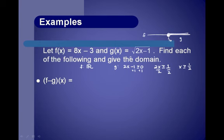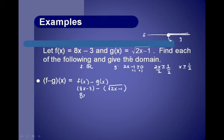f minus g of x means f of x minus g of x. Substituting in, we get 8x minus 3 minus the square root of 2x minus 1. To subtract, you leave the first one the same and change the sign of everything after the square root, giving us 8x minus 3 minus the square root of 2x minus 1.